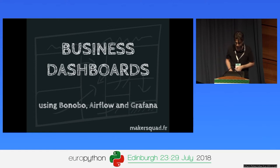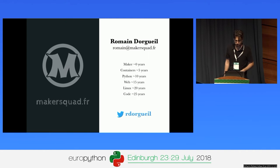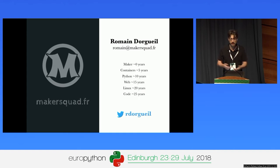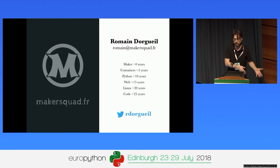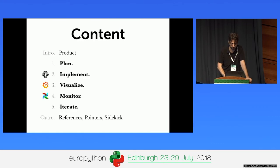I'm Romain Dorgueil. I've been making computer-related stuff for a long time, and this year I decided to change what I'm doing. I'm building a new company called Maker Squad. My goal is to build cloud-native products, mostly SaaS products using containers, and help clients achieve cloud-native infrastructure, which is not really natural for a lot of people.